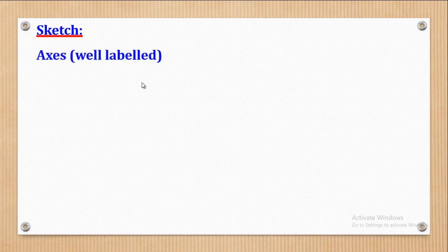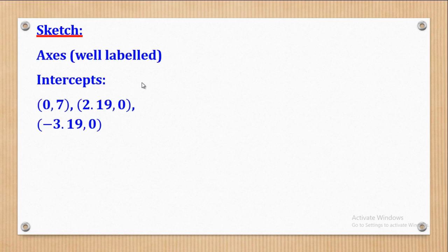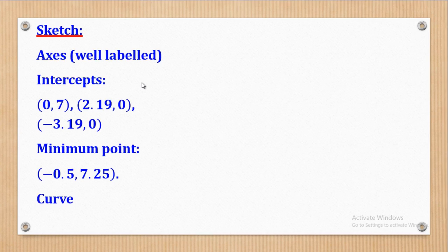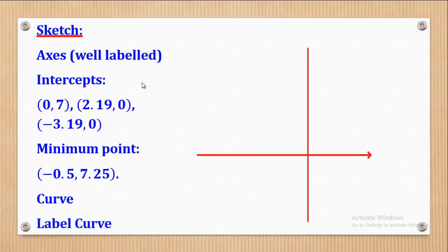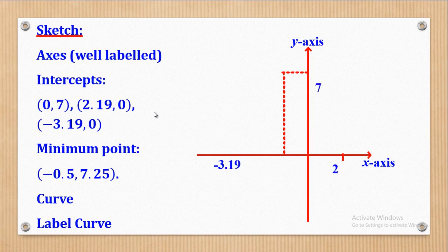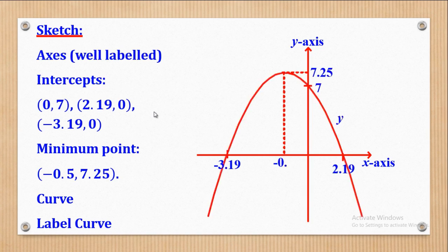Now that I've got the intercepts, turning point, and nature of the turning point, the last step is to sketch. Label the axes, locate the intercepts, and mark the maximum turning point. Since this is a maximum point, the curve has an inverted U-shape. Sketch and label the curve accordingly — that is the required sketch.